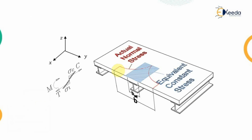Consider the stress distribution on the flange of an I-section supporting a plate that transfers load. The actual width is B, and the actual non-uniform normal stress distribution occurs over the full width. However, we consider an equivalent constant stress over a smaller effective width BF. This effective flange width is significantly reduced compared to the actual width, causing a change in section properties.